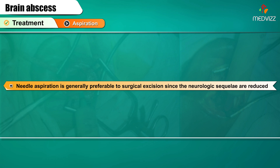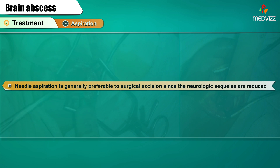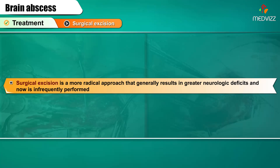Needle aspiration is generally preferable to surgical excision since the neurologic sequelae are reduced. Surgical excision is a more radical approach that generally results in greater neurologic deficits and is now infrequently performed.